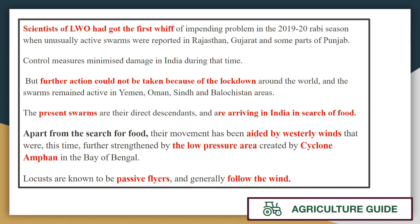Locust attack was predicted but lockdown has slowed coordinated response. The swarms are active in the Yemen-Oman-Pakistan region. The locusts came to India for two reasons: first, food; and second, because locusts travel towards low pressure areas created by cyclones in the Bay of Bengal, following wind direction. They are passive flyers and use wind energy rather than their own.